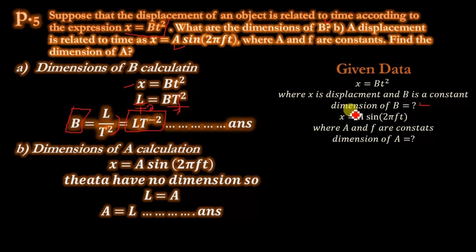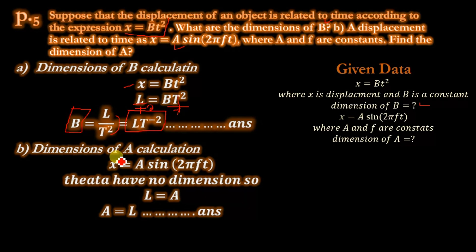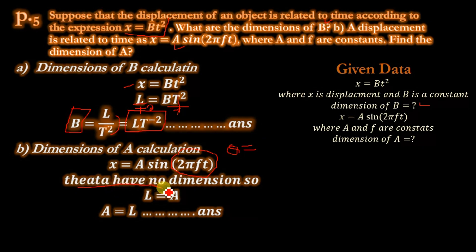For part b, x = A·sin(2πft). The dimension of x is L, so L = A·sin(2πft). The term 2πft is actually an angle θ, which is dimensionless — so we do not need to consider it. Therefore, the dimension of A equals L (length), and that is the answer.